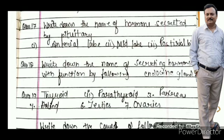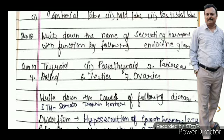Write down the names of secreted hormones with functions from the following endocrine glands: number one thyroid, number two parathyroid, number three pancreas, number four adrenal, next testes, next ovary — mention the functions of hormones released from these glands. Also, one gland was missed: thymus gland.